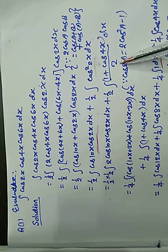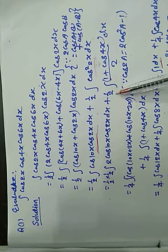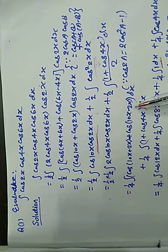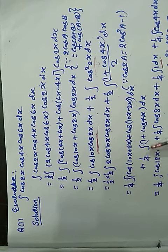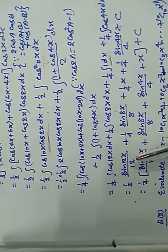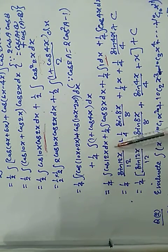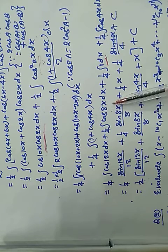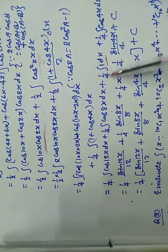The 1/2 factor is outside. Then multiplying and dividing by 2 for the cos10x·cos2x term again, this gives 1/4 integration of [cos(10x+2x) + cos(10x-2x)] dx plus 1/4 integration of (1 + cos4x) dx, which equals 1/4 integration of cos12x dx plus 1/4 integration of cos8x dx.